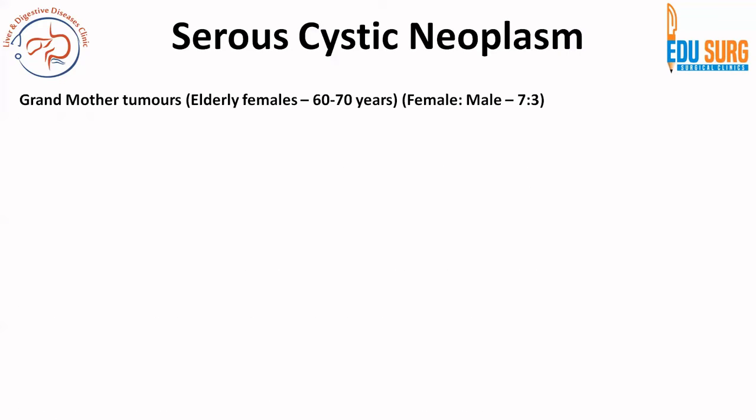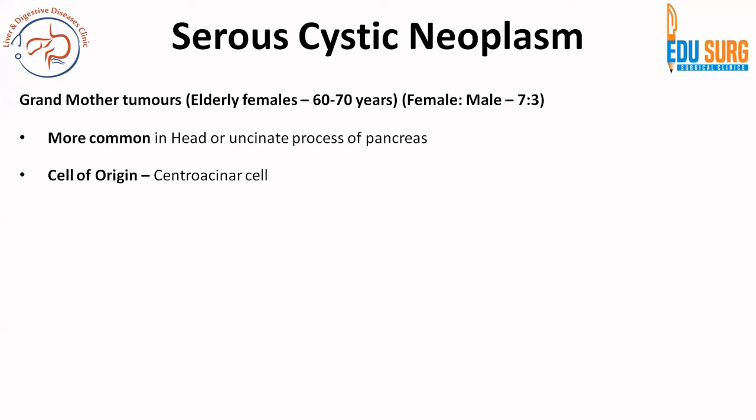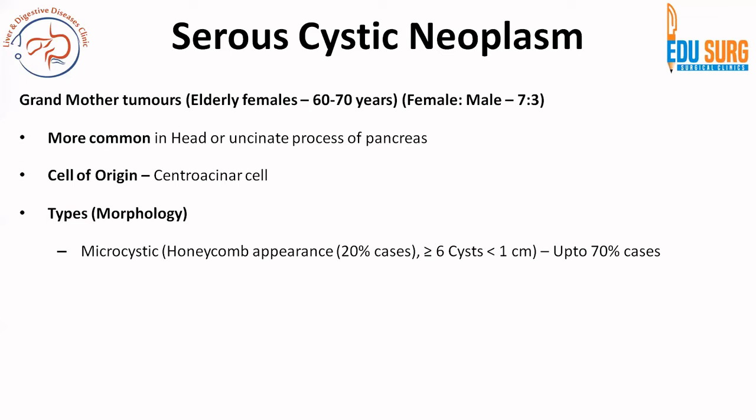The first is serous cystic neoplasm. It is also known as grandmother tumor because it is common in elderly females, 60 to 70 years of age. Female to male ratio is 7 to 3. It is more common in the head or uncinate process of the pancreas. Cell of origin is the centroacinar cell — a very commonly asked question. The epithelial lining will be squamous. When we talk of types, the most common type — up to 70% of cases — is microcystic. The classical honeycomb appearance is seen in 20% of cases.